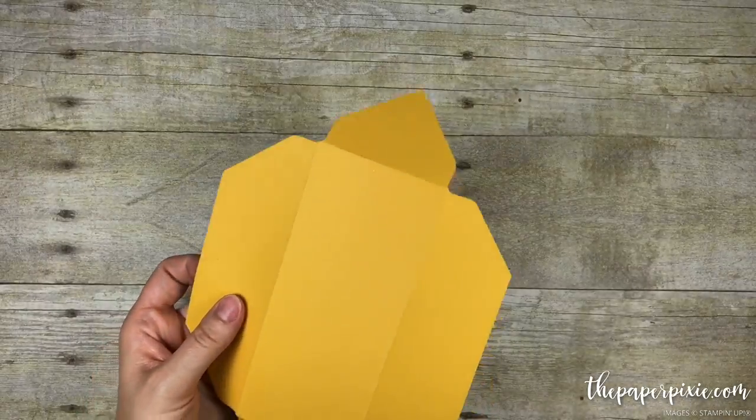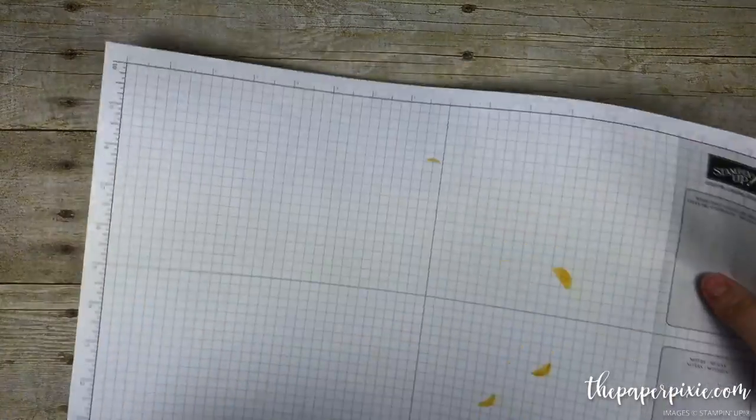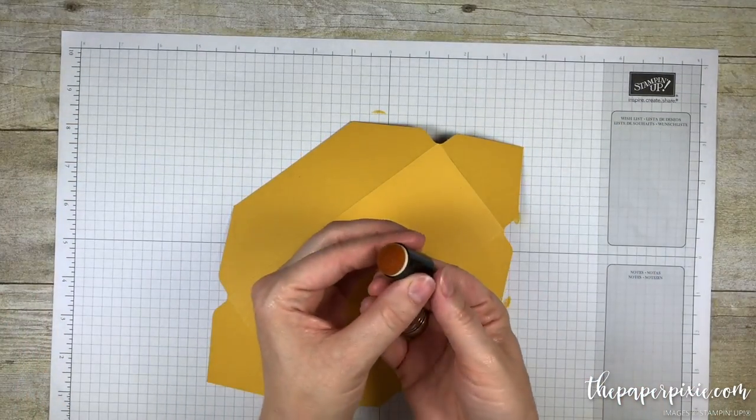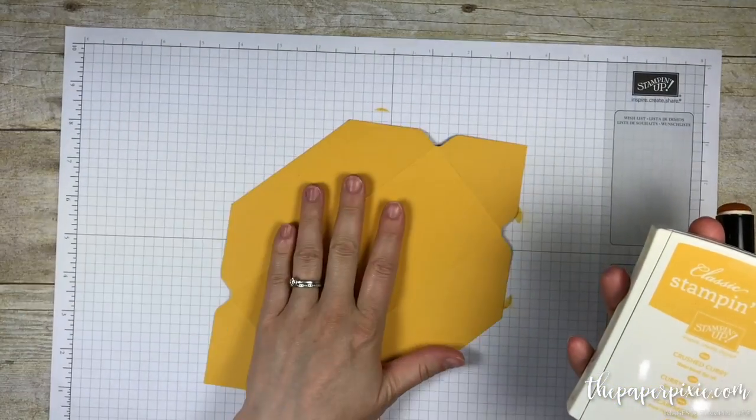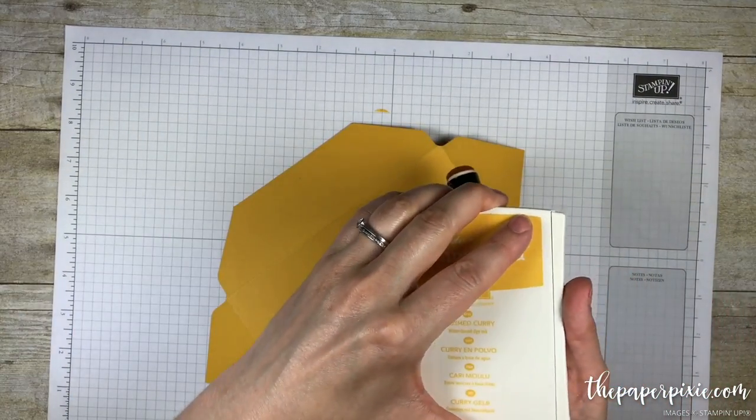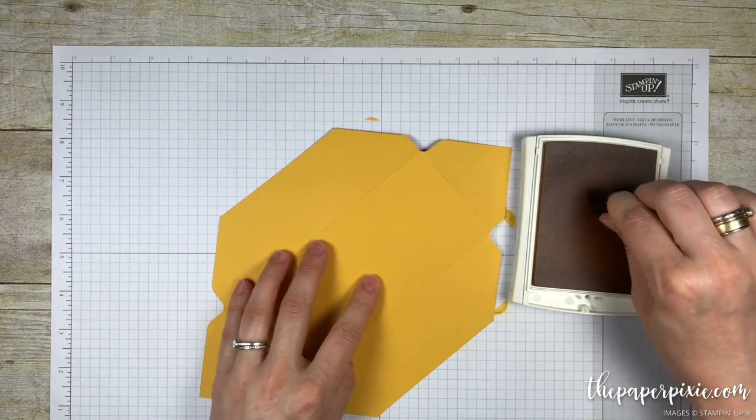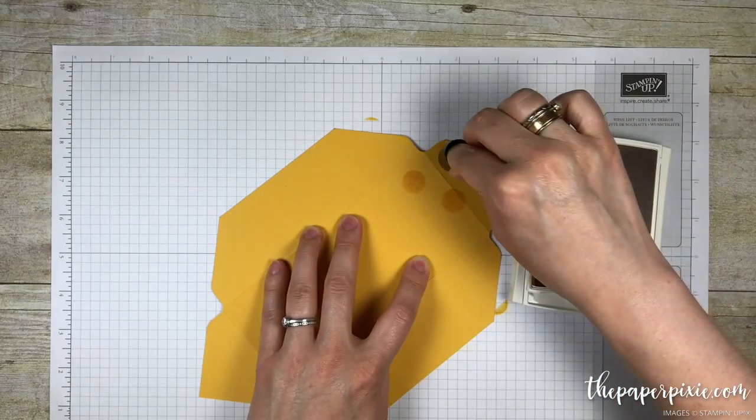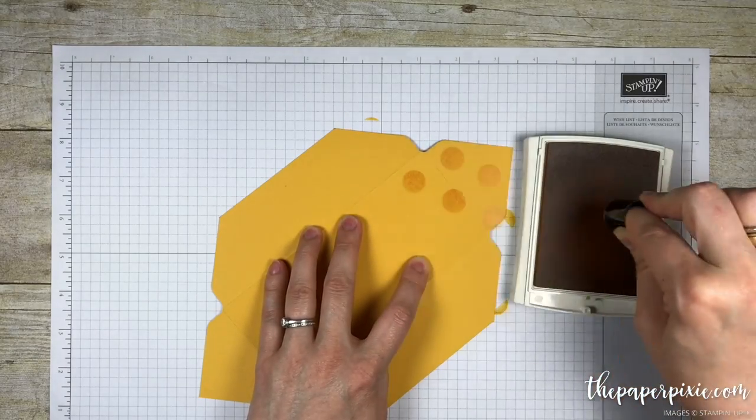Now before we put our project together, we are going to add some polka dots to this. I am going to use a sponge dauber which comes in a pack of five. This is crushed curry card stock, we are going to use crushed curry ink. I am just picking up ink on my sponge dauber and stamping that down. It is going to give me kind of a perfect polka dot circle. I am just randomly adding polka dots all around the envelope.